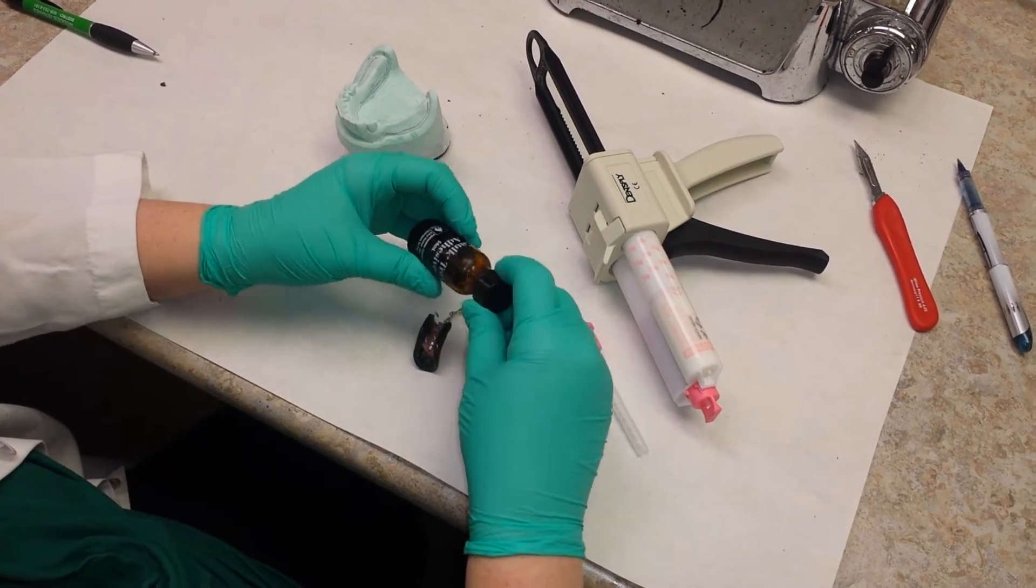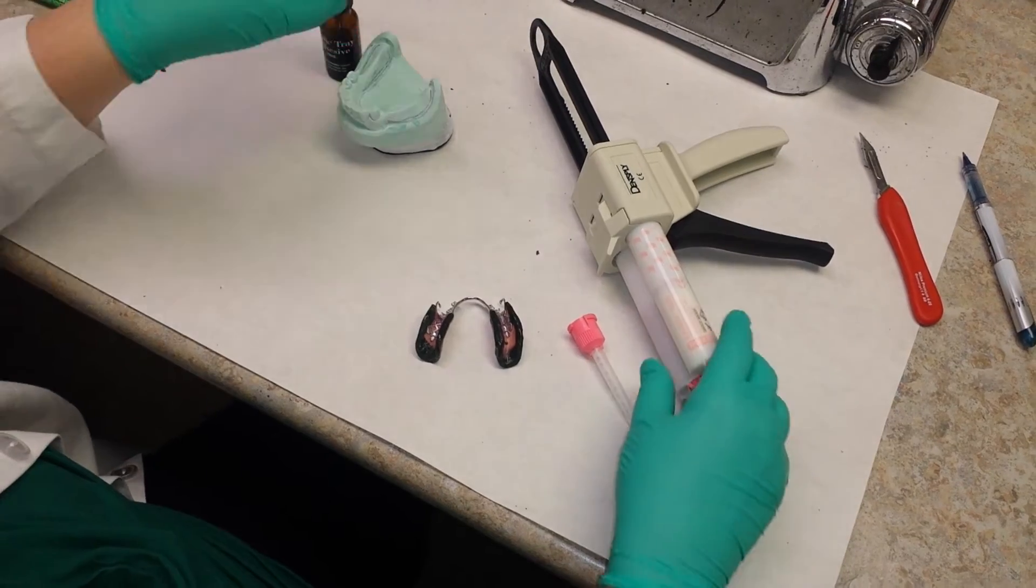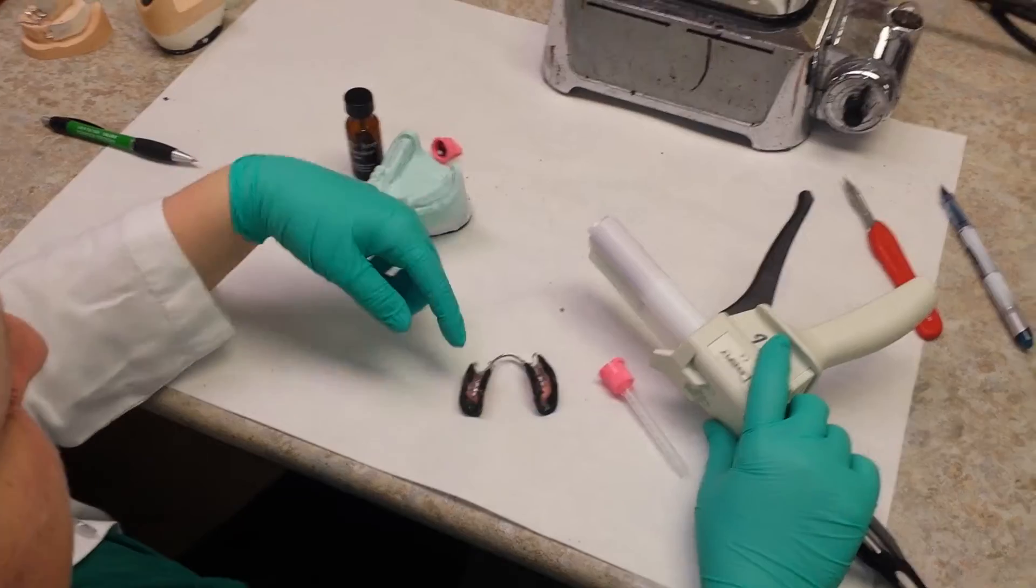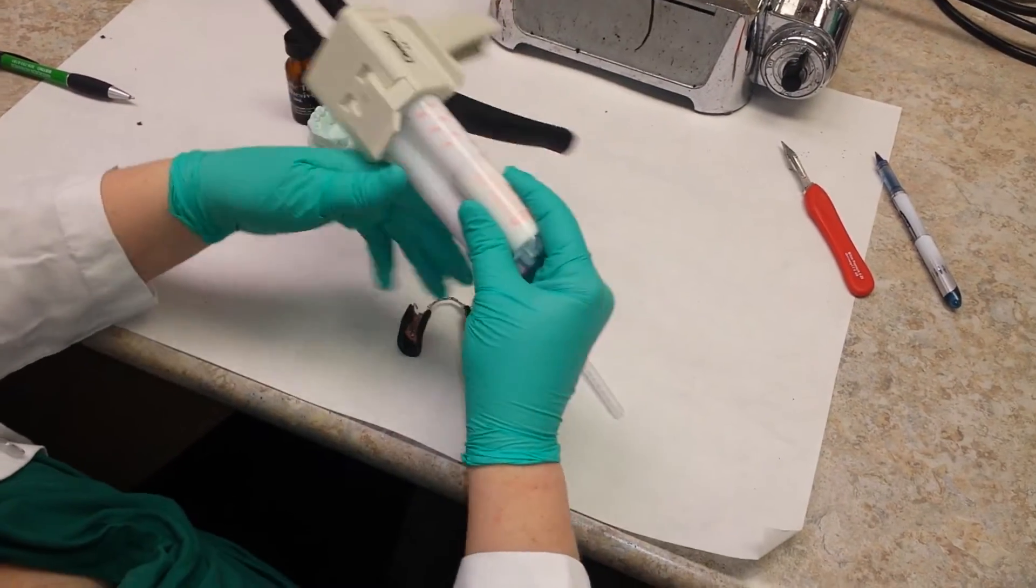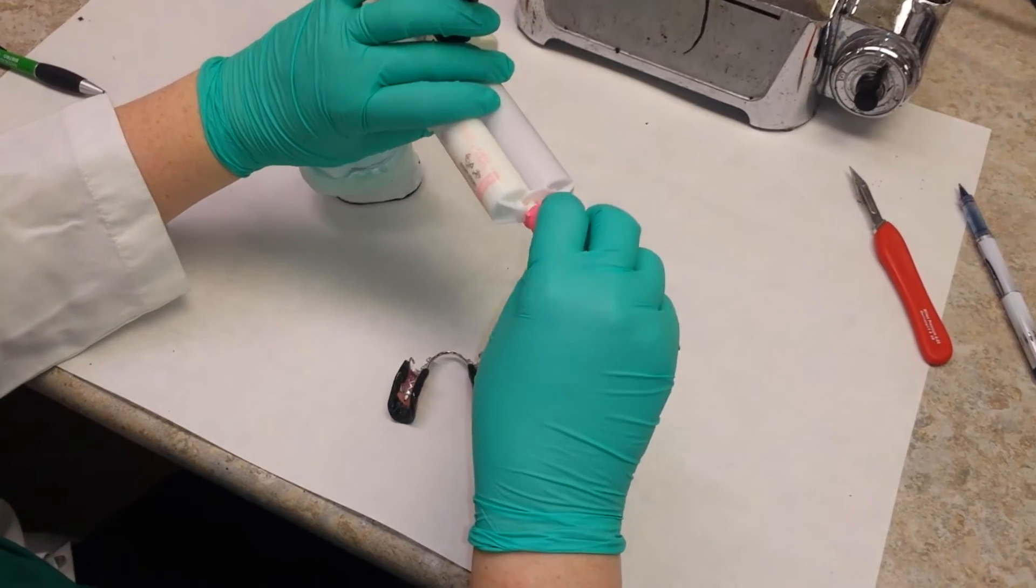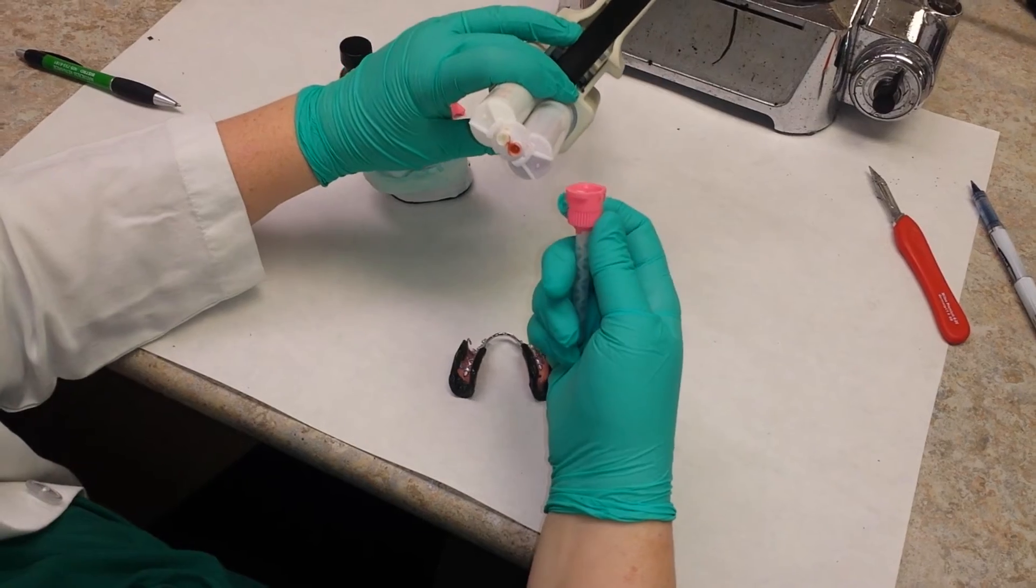Make sure that the adhesive is one that goes with the brand of the impression material that you're using, so you'll get the best adhesion. It's really best to let this sit about five or ten minutes, let it fully dry before using the adhesive, so you're going to get your best adhesion that way.